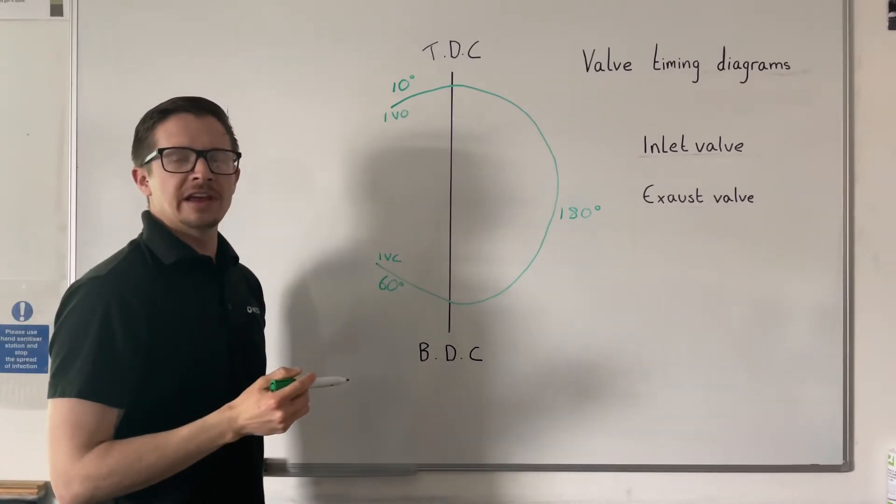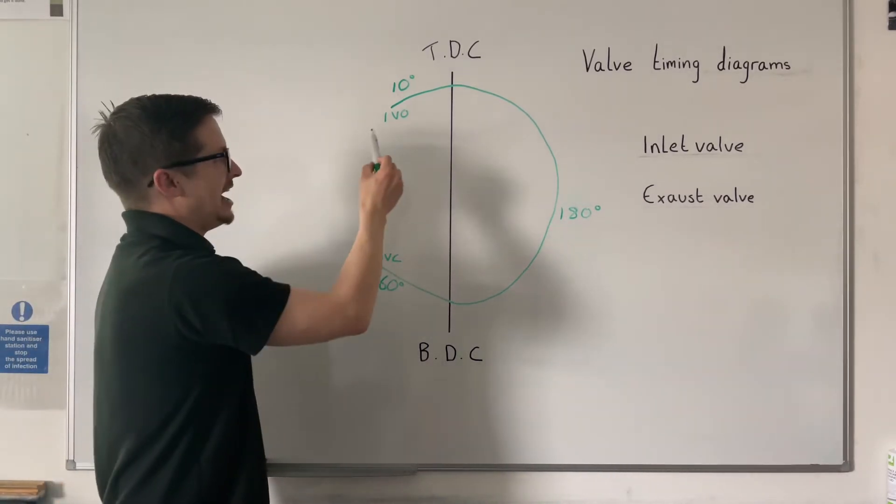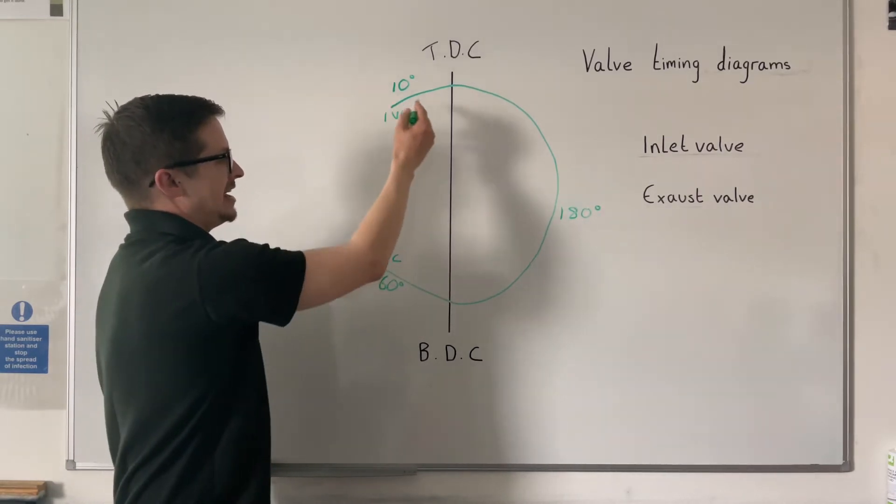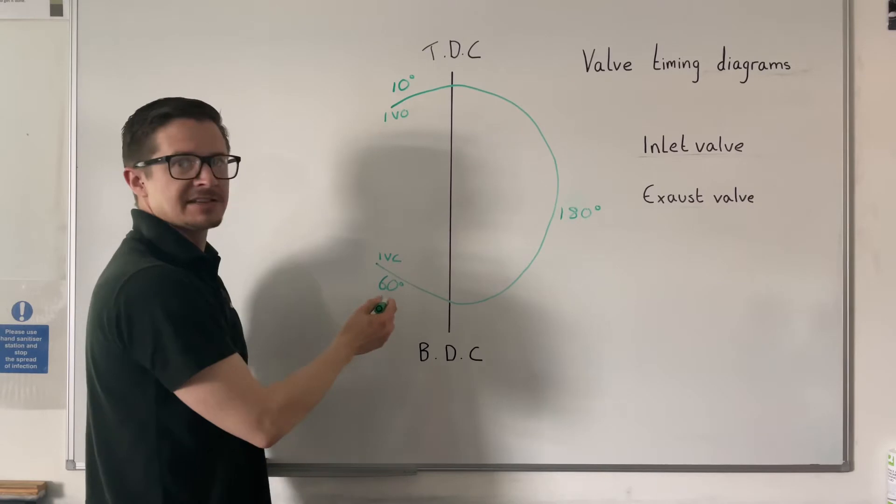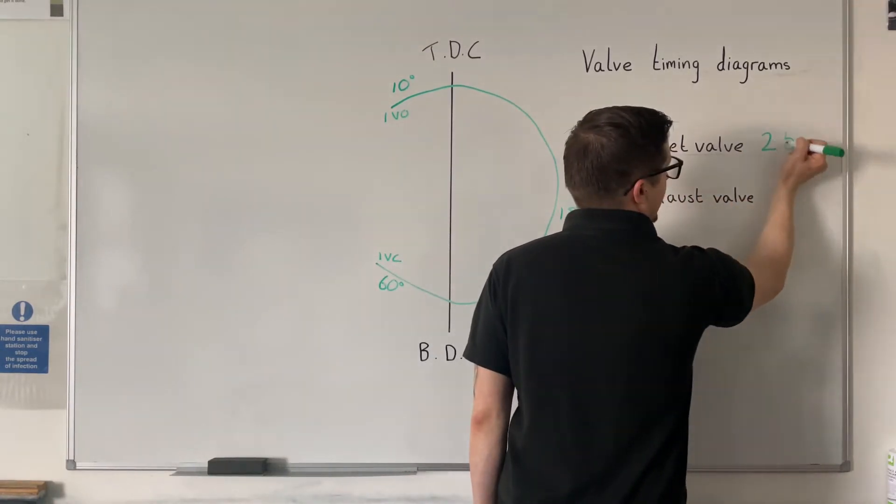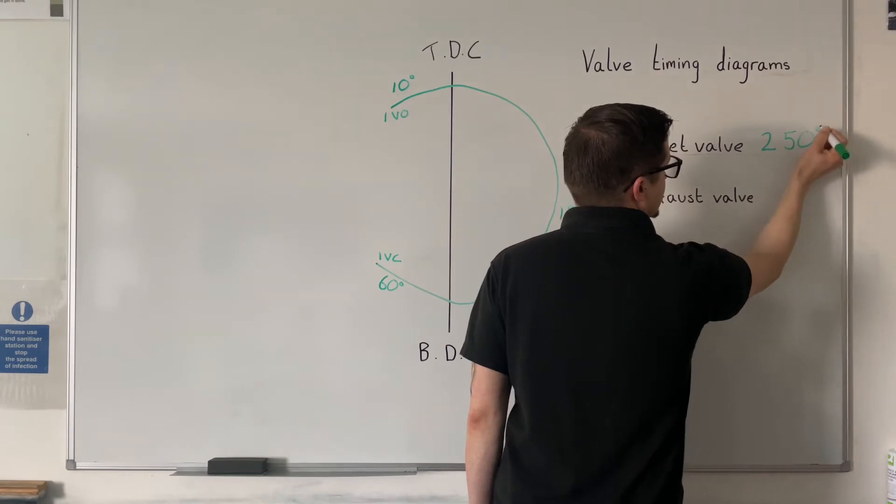To work out how long the inlet valve is open, you need to add up these figures. So your inlet valve is open for 10 plus 180 plus 60, which is 250 degrees.